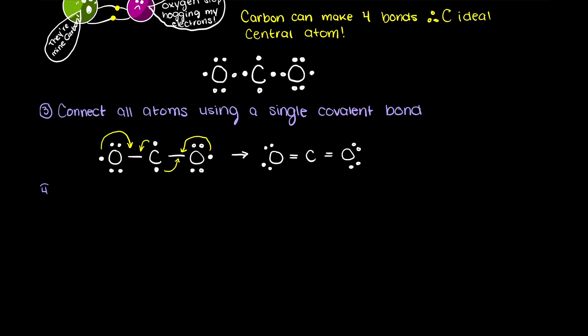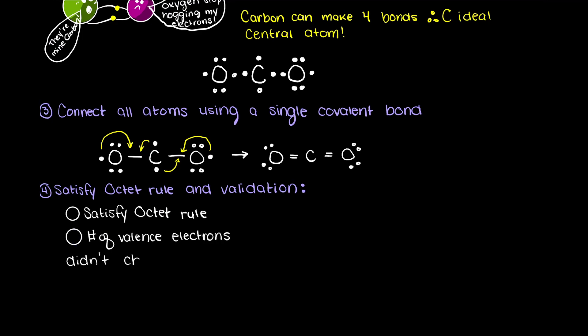Next in step 4 we need to ensure that we satisfy the octet rule for all the atoms that require it. If you are unsure which atoms the octet rule applies to, I will leave a link in the description so that you can know which atoms abide by the octet rule. So, since carbon and oxygen both abide by the octet rule, we need to ensure that each atom in our Lewis structure has 8 electrons in its valence shell. So, we can move these lone electrons on each of our atoms to form double bonds with the central carbon.